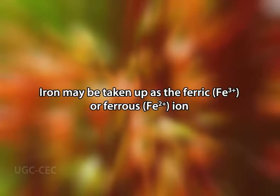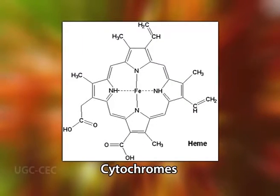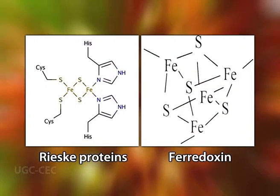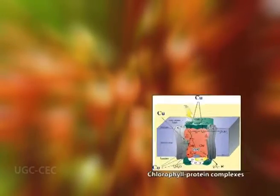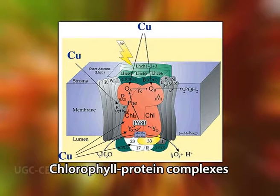Iron may be taken up as the ferric or ferrous ion, although the ferrous form is more common due to its greater solubility. Iron is a part of the catalytic group for many redox enzymes, including the heme-containing cytochromes and non-heme iron-sulfur proteins, for example Rieske proteins and ferredoxin. It is also required for the synthesis of some chlorophyll-protein complexes in the chloroplast.